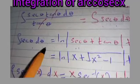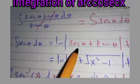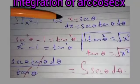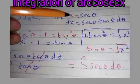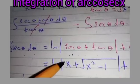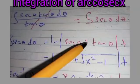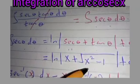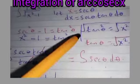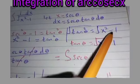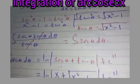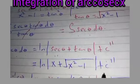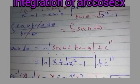Now we back-substitute. We found sec θ = x and also tan θ = √(x²−1). So we substitute these values: sec θ becomes x, and tan θ becomes √(x²−1), giving us ln|x + √(x²−1)| plus c''.